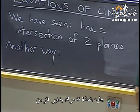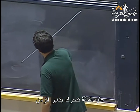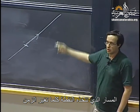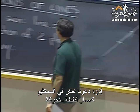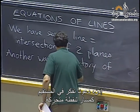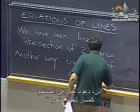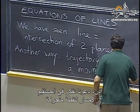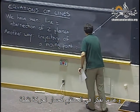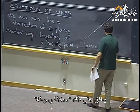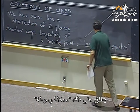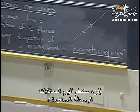If you have a line in space, you can imagine that you have a point on it, and that point is moving in time. The line is the trajectory of the point as time varies. So think of a line as the trajectory of a moving point. When we think of the trajectory of a moving point, that's called a parametric equation. So we're going to learn about parametric equations of lines.